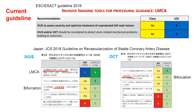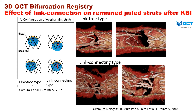In Japanese guidelines, IVUS for left main and bifurcation is Class 1 and 2A respectively, while OCT for bifurcation is Class 2A. Recent innovation in 3D OCT can visualize guidewire re-crossing in the side branch and subsequent stent deformation by kissing balloon inflation. We conducted a 3D OCT bifurcation registry in Japan and clarified the effect of link connection on remaining jailing struts after kissing balloon inflation.